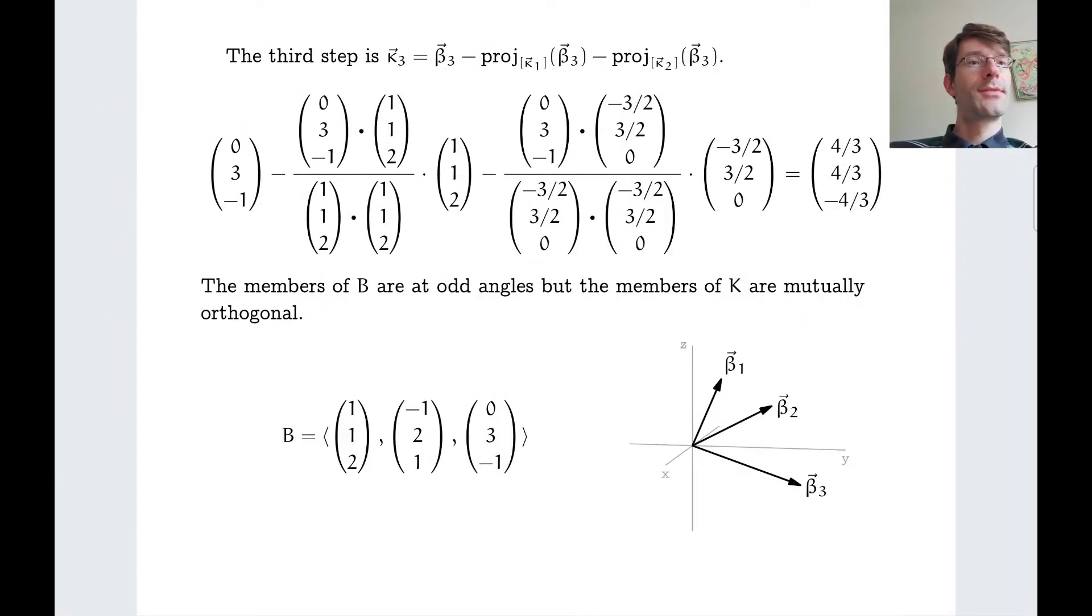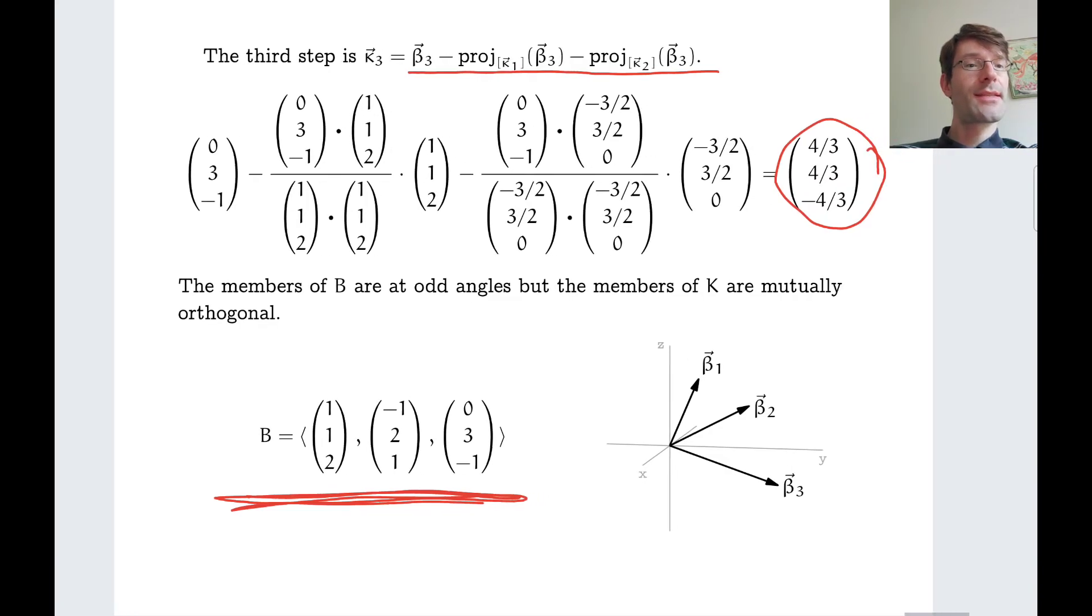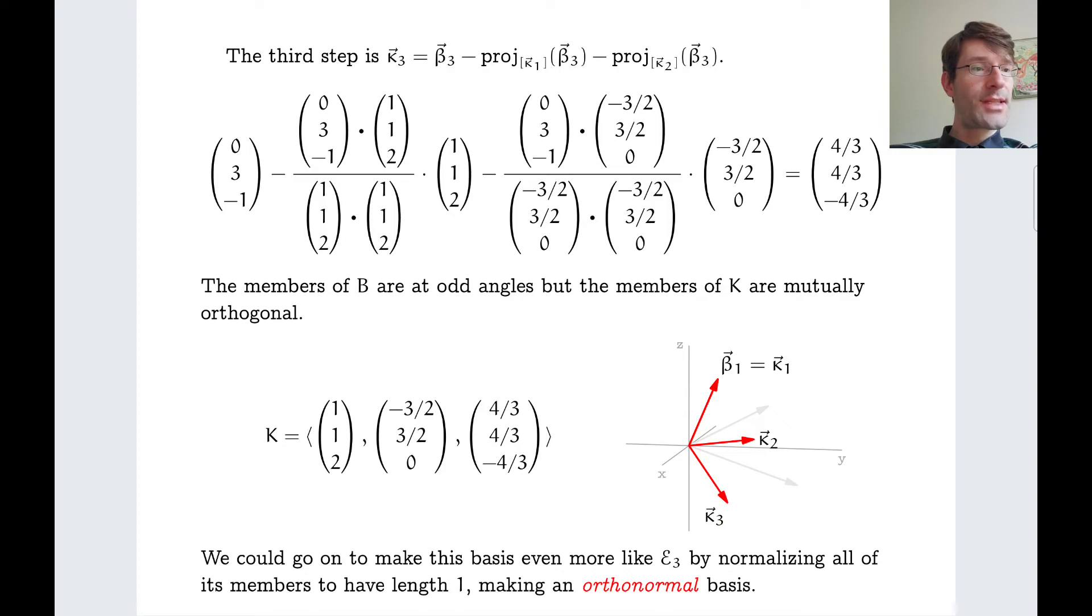And then finally, kappa 3 we obtain by projecting away both its kappa 1 and its kappa 2 component, which gives us the third basis vector. And kappa 1, kappa 2, kappa 3 are now orthogonal. This picture means to illustrate that the original basis is not orthogonal. It's always difficult to tell in 3D space. Of course, I can only show you some projections, as it happens to be, projections of three-dimensional space. And if we switch to this view, now you see kappa 1, kappa 2, and kappa 3. So these three vectors are now all meant to be mutually orthogonal, believe it or not.